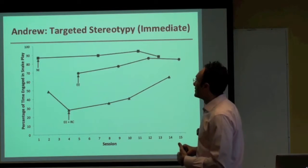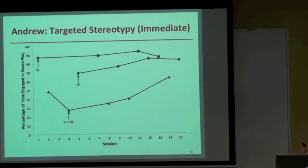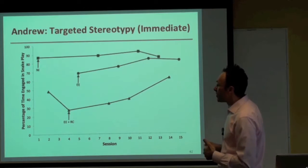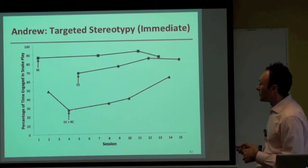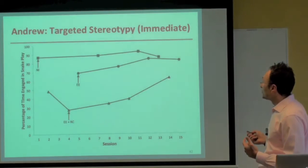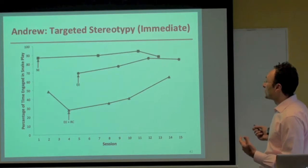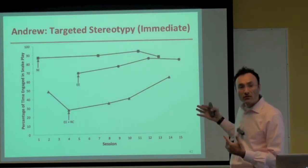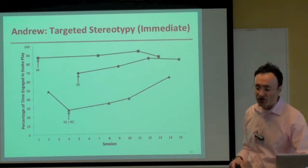For Andrew, the no-interaction condition shows high and stable durations of stereotypy. When the enriching stimulus is introduced, there's an initial reduction that increases over time — not much difference from baseline. When response cost is added to environmental enrichment, there's a greater reduction, but with an increasing trend over time — ideally this should have been continued longer. It's possible Andrew would require additional intervention beyond environmental enrichment and response cost.